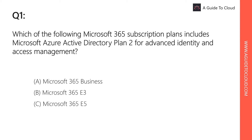Question 1: Which Microsoft 365 subscription plan includes Microsoft Azure Active Directory P2 for advanced identity and access management? The Business plan doesn't include advanced security features. E3 includes some security features but not all advanced Azure AD P2 capabilities. Azure AD P2 is part of Microsoft 365 E5, or it can be purchased as a standalone product. The answer is C — Microsoft 365 E5.